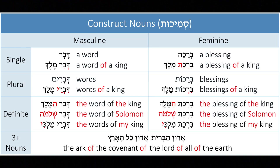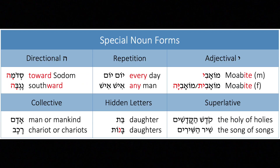The next two charts are more advanced. Construct nouns are tricky but appear in almost every verse in the entire Tanakh. And there's also a chart for special noun forms, such as directions, repetition, and superlatives.